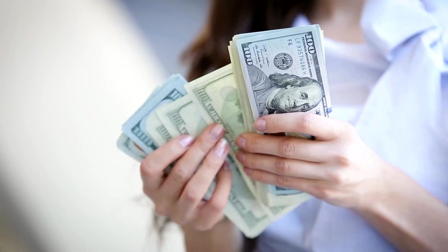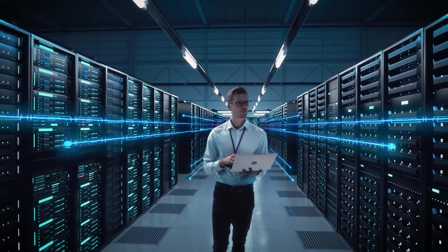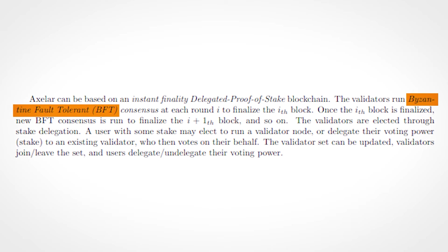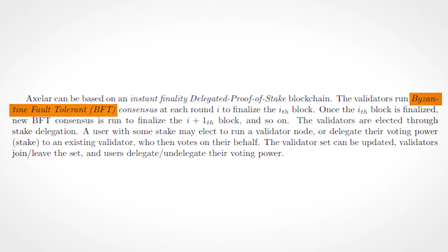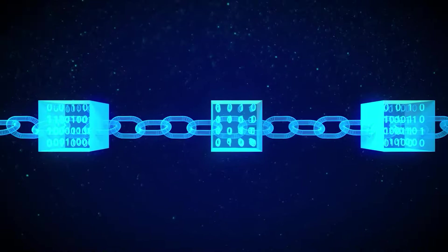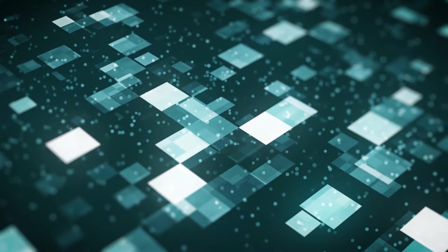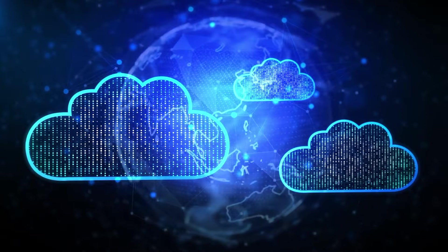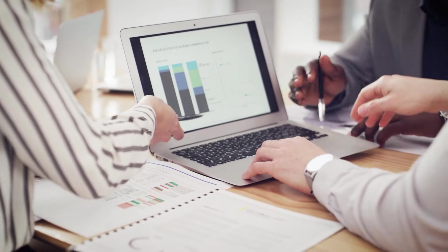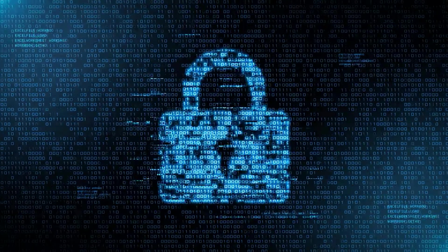All transactions and data transfers are verified and secured by the Axelar network and its validators. Axelar also uses a Byzantine Fault Tolerant or BFT consensus algorithm that ensures the safety and liveness of the network. Additionally, Axelar provides interoperability solutions such as decentralized bridges — smart contracts that allow users to lock or unlock assets on one chain and mint or burn corresponding tokens on another chain. These decentralized bridges are trustless and non-custodial, meaning users retain full control over their funds.